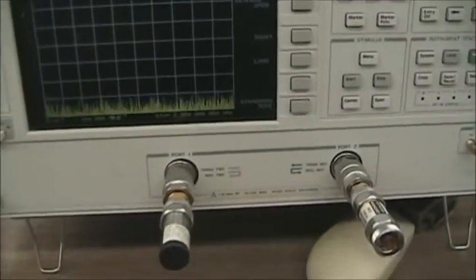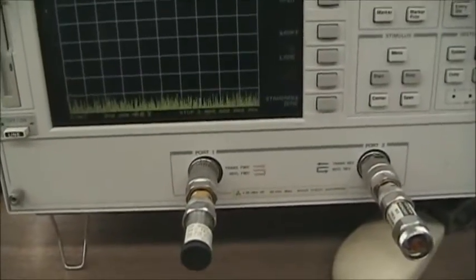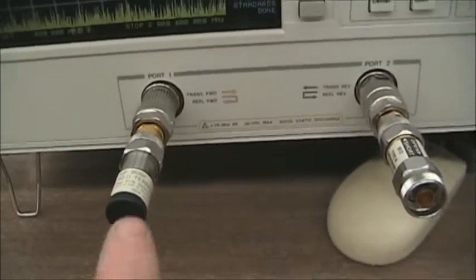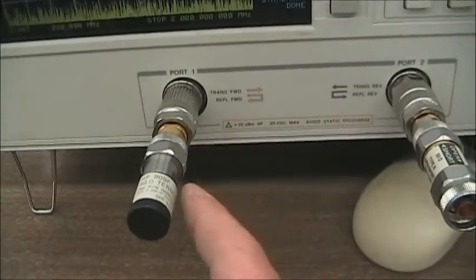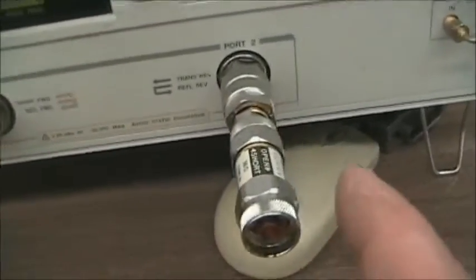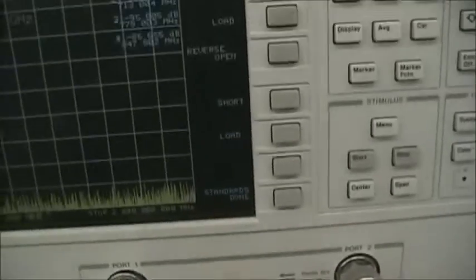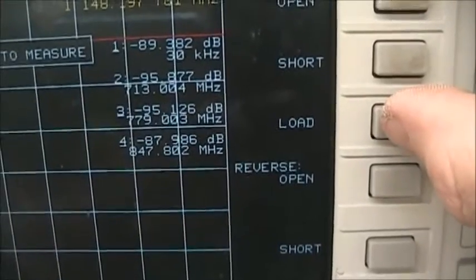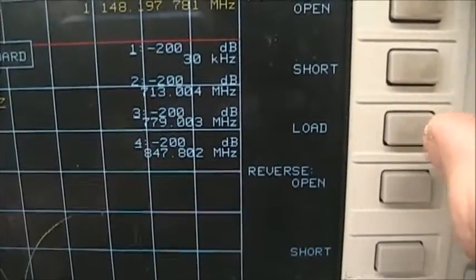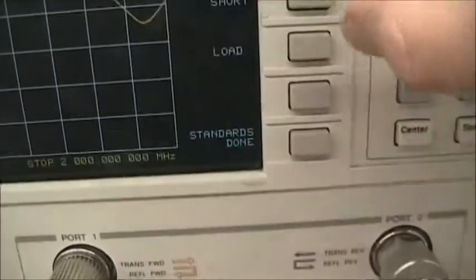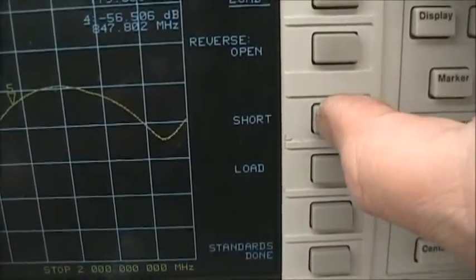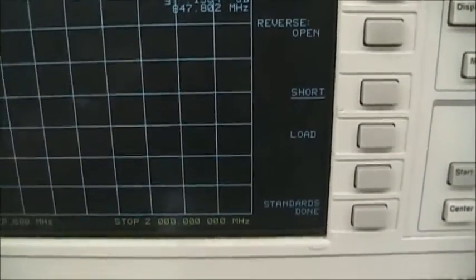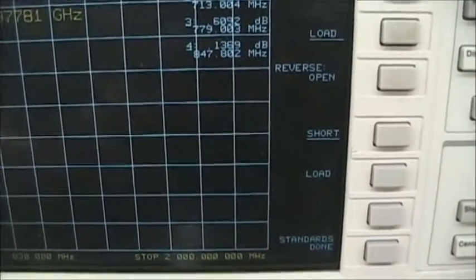I have removed the cable and filter, and now I have my calibration loads on the network analyzer. On port one, I have the 50 ohm load. On port two, I have the short. Now on the forward port, which is where the 50 ohm load is, we just press load, and on the output, we'll push short because we have the short on the output. Now we're simply going to go through and do short open load on both ports.